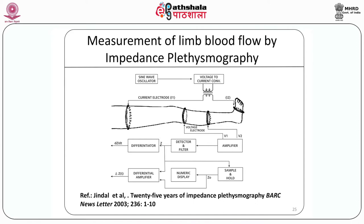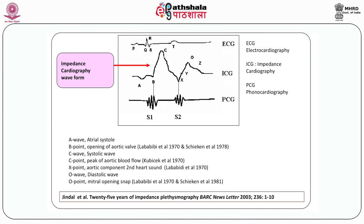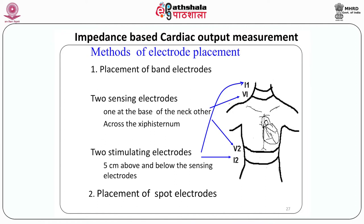This slide gives the setup for recording blood flow to the calf area by using impedance plethysmography. This technique provides not only the measure of pulsatile blood flow but also gives the provision of calculating the change in resting blood flow in two conditions. The oscillating blood flow has been used to calculate blood flow variability. BARC and AIIMS New Delhi has carried out large work in this area in India, available in the given reference.